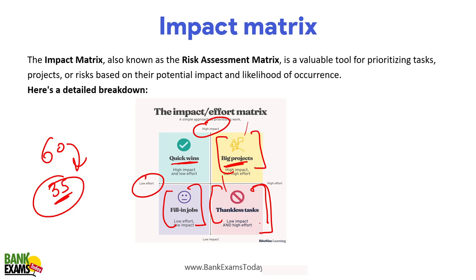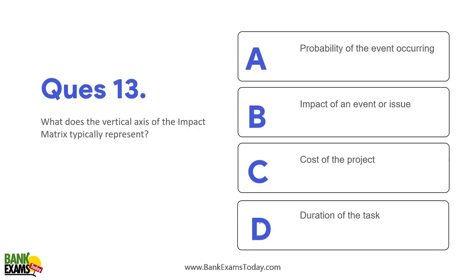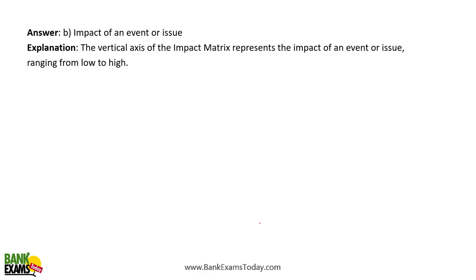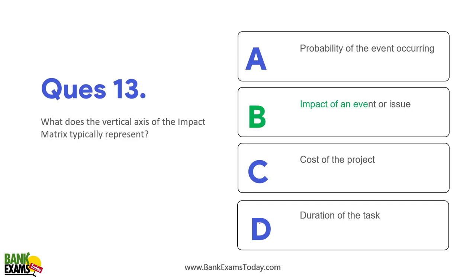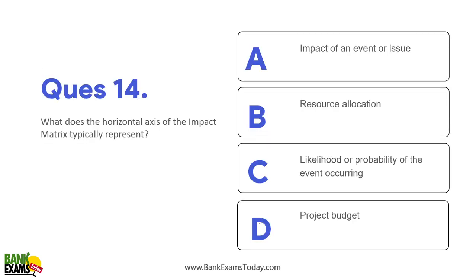What does the vertical axis on the impact matrix typically represent? It represents the impact of an event or issue. Typically the axes represent impact and effort. The horizontal axis on the impact matrix typically represents the probability of an event occurring.